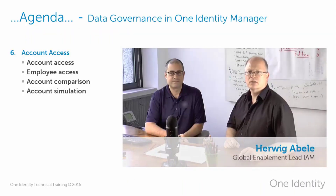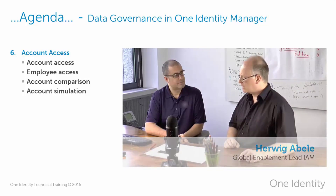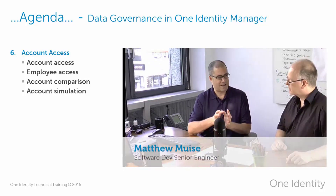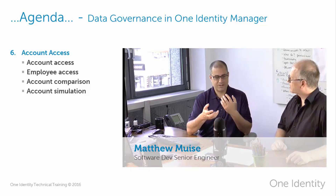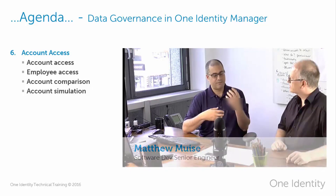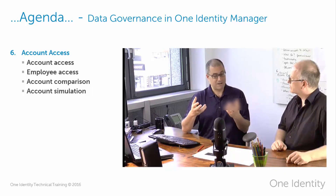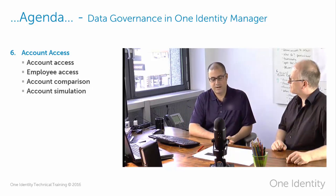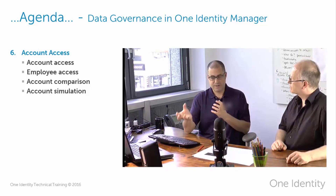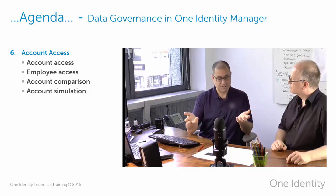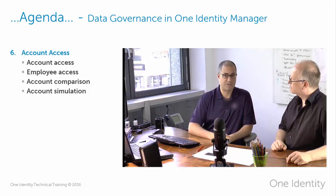Welcome again to another session around data governance in Identity Manager. In this video we're going to be talking about account access. We have two types of access reporting: resource access and account access. This one is focused on account access, which is our bread-and-butter main type of reporting. You can run account access from an individual perspective or from an employee perspective, and we'll also talk about account comparison and simulation.